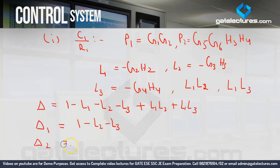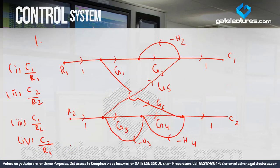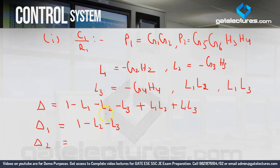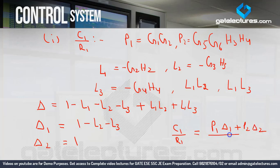For Del2 — the second forward path touches all three loops L1, L2, and L3. So all loop gains are excluded and Del2 = 1. Therefore, C1 upon R1 by Mason's gain formula is (P1 Del1 + P2 Del2) divided by delta, which gives the answer easily.